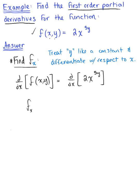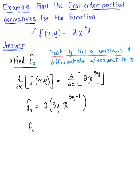We have the partial derivative of the function with respect to x. Since we are treating y like a constant, we have x raised to some real number, so we use the power rule. This gives us 2 multiplied by the exponent 5y, times x raised to the 5y minus 1. Simplifying, the partial derivative with respect to x equals 10y times x raised to the 5y minus 1.